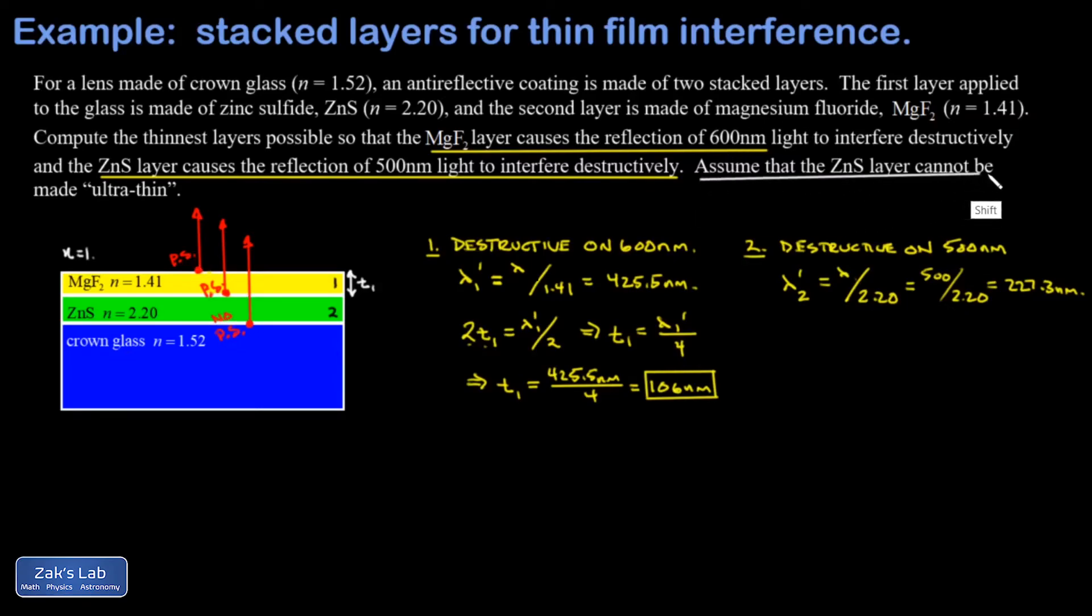A quick note: at the very end of the instructions it says assume the zinc sulfide layer cannot be made ultra thin. There's a section at the end of my original thin film interference video about ultra thin films. When I have this fast to slow to fast kind of transition, if I just make the thickness of the film significantly less than the wavelength of the light, it will interfere destructively on all wavelengths. Because one reflection is phase shifted and the other is not phase shifted, those will be pretty much out of phase if I make the film extremely thin—I'm talking five or ten nanometers. We're assuming that in the manufacturing process this is not possible.